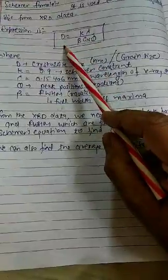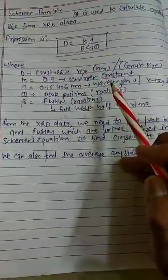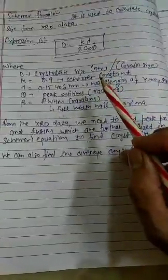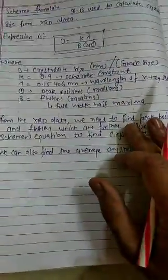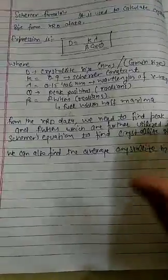Here, D is basically the crystallite size that we need to calculate. Obviously it is in nanometers, as we are living in the nano world where everything we are scaling down so as to achieve maximum performance with maximum efficiency.